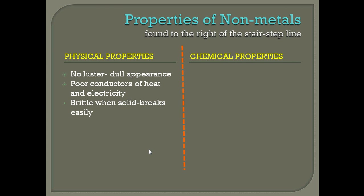Non-metals are also going to have a brittle physical property, which means they break easily. If you try to bend a solid non-metal, it's going to break — you won't be able to hammer it or pull it, and it would break before it could mold. That also means it's not going to be ductile or malleable. Additionally, non-metals are going to have a lower density than metals, meaning they have less mass relative to their volume and are not packed as tightly.